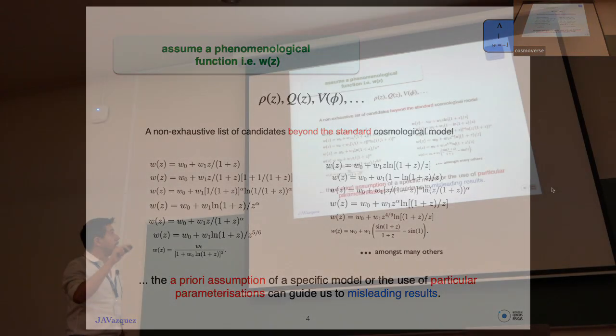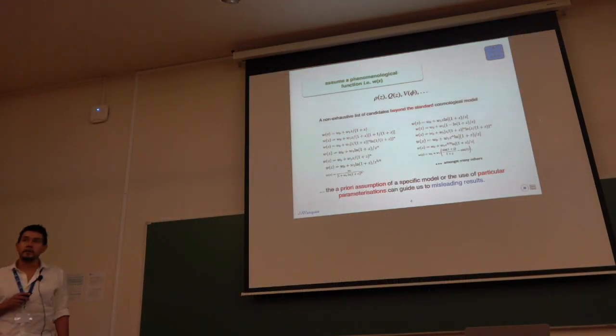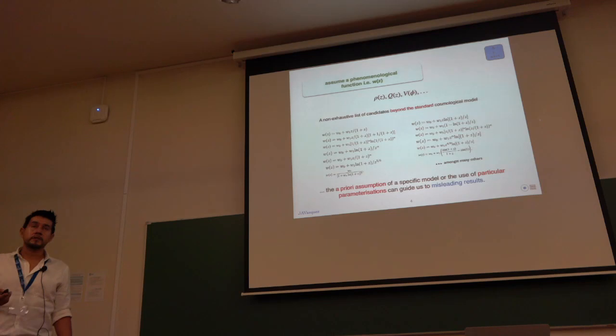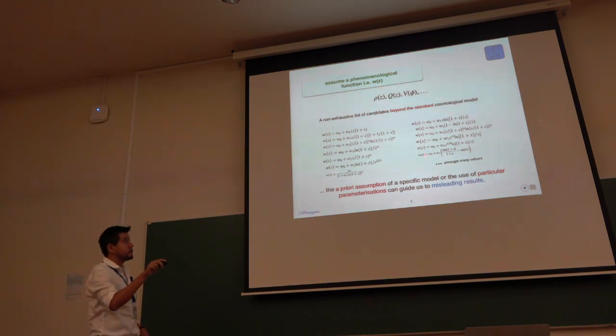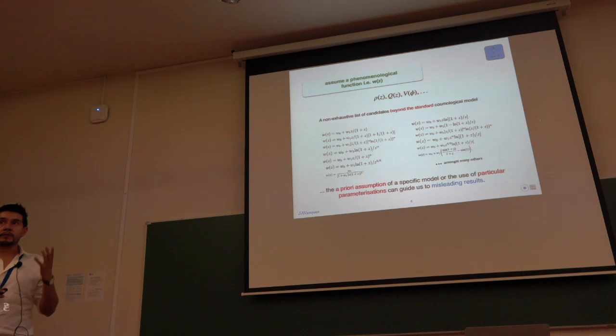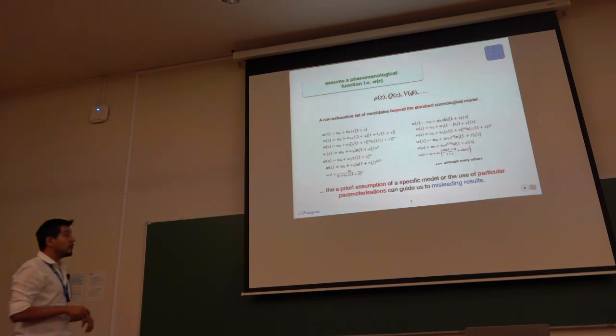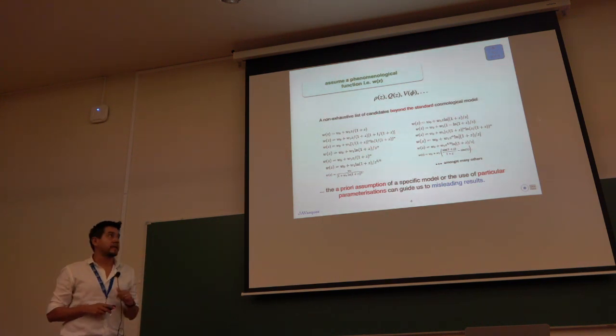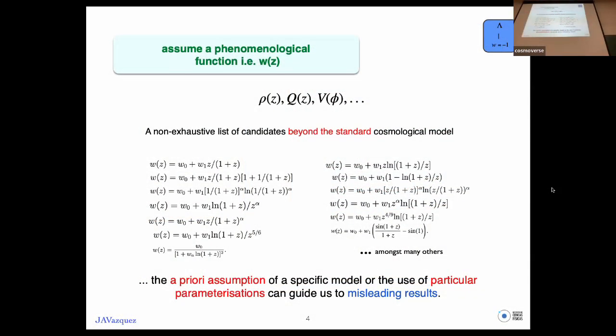However, by selecting one particular parameterization, it may cause some misleading results. Because if I select this parameterization and then it turns out the dark energy is described by some other function, it could be very complicated to describe one in terms of the other. So we decide to go the other way around.